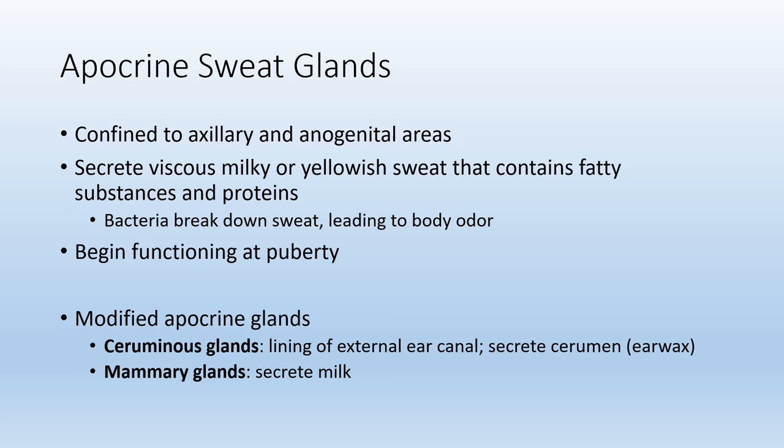While on the topic of apocrine sweat glands, we have some modified apocrine glands. These are not found in the axillary or anogenital areas. They are known as ceruminous glands — ceruminous glands produce cerumen, also known as earwax. Ceruminous glands are found in the external ear canal. Another type of modified apocrine gland is a mammary gland, which will produce and secrete milk from the breast.